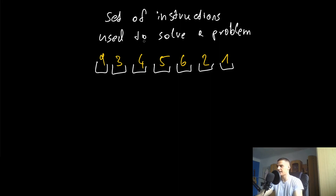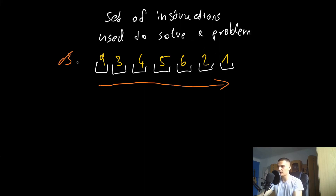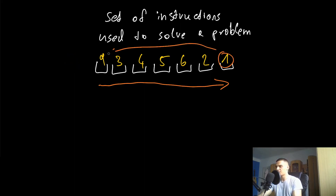What we could do is tell the computer: go through the whole list and find the smallest element. Start with 9 — that's the smallest so far. Then 3, which is smaller than 9, so 3 is the current minimum. Four is larger, ignore it. Five, six, same. Two is smaller than 3, so two is the new minimum. Then one — one is the minimum. So you end up with 1 as the minimum. You swap it into the first position. Now you have 1, 3, 4, 5, 6, 2, 9. That's the first step.